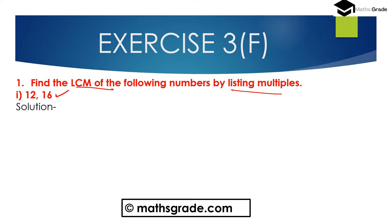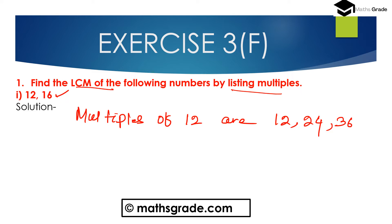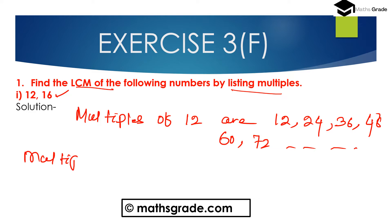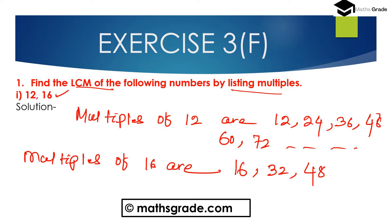First find out the multiples of 12. Multiples of 12 are: 12, 24, 36, 48, 60, 72, and so on. Then find the multiples of 16. Multiples of 16 are: 16, 32, 48, 64, 80, 96, and so on.